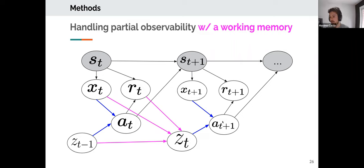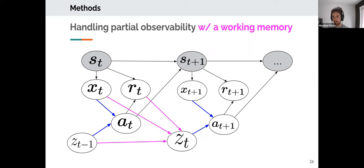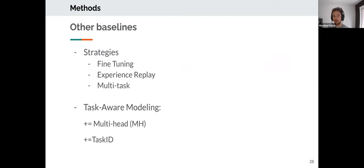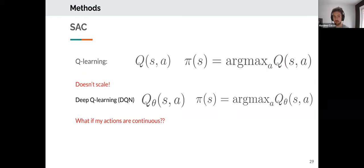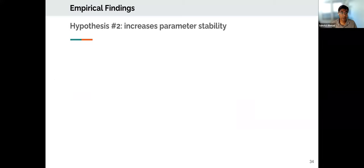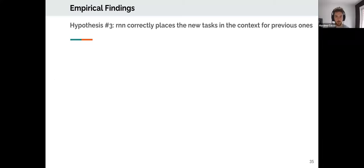On architecture: the RNN takes in the previous trajectory up to time t and encodes it into z_t. This z_t is then fed — appended to the input vector — to the actor (an MLP) and the critics (also MLPs). Everything is trained end-to-end without changing the loss function. It's quite simple.